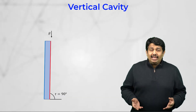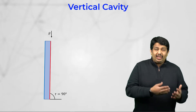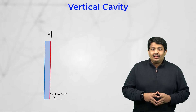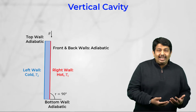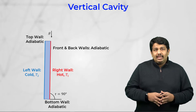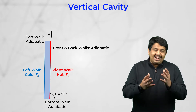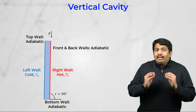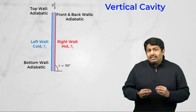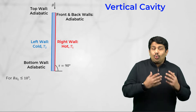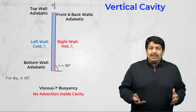Similar observations can be made in the case of vertical rectangular cavities, i.e., where tau is 90 degrees. In this case, two of the opposing side walls are maintained hot and cold; the other four walls, including the top and bottom, are adiabatic. Until a critical Rayleigh number of about 1000, the buoyancy force is not strong enough to overcome the viscous resistance and the Nusselt number is approximately equal to 1.